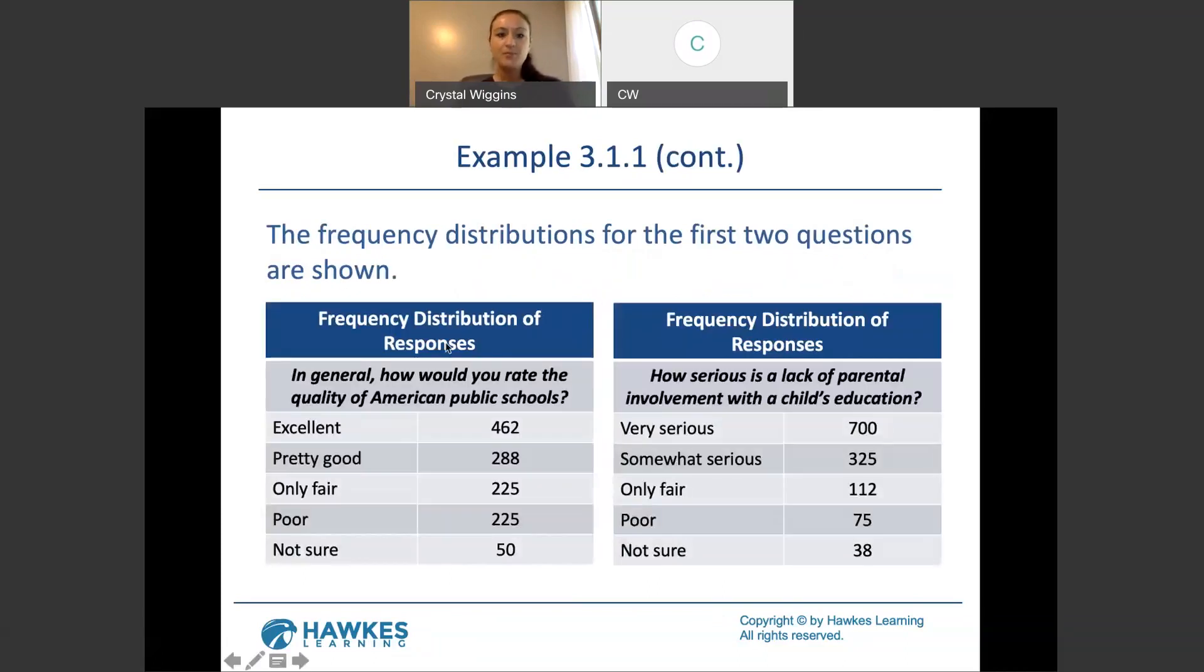So, here we are. We have a question in general. How would you rate the quality of American public schools rated from excellent to poor and not sure? And we've summarized the 1250 responses by counting how many of those responses said excellent. It was 462. How many were pretty good? 288 and so on.